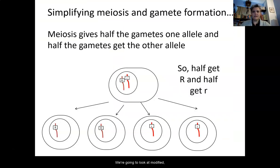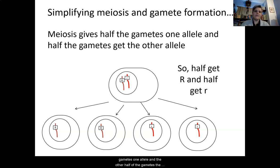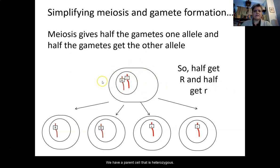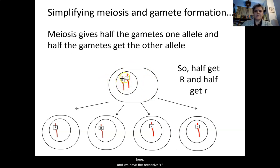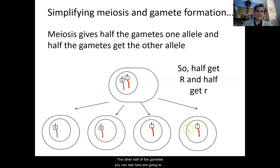We're going to look at a modified or simplified meiosis diagram here in the gamete formation. Meiosis gives half the gametes one allele and the other half the other allele. This is an example using the bioflower. We have a parent cell that is heterozygous — heterozygous means it has two different alleles. We have the dominant R for red and the recessive r for blue. Half of the gametes are going to get the dominant R, and the other half are going to get the recessive r. So again, half dominant R, half recessive r.